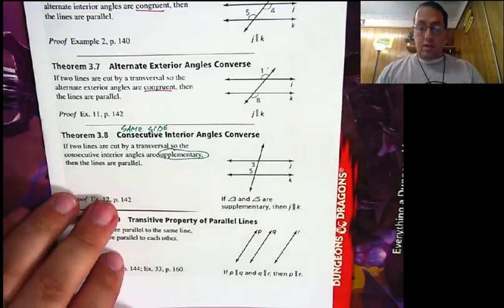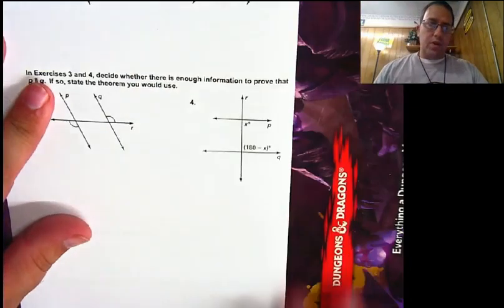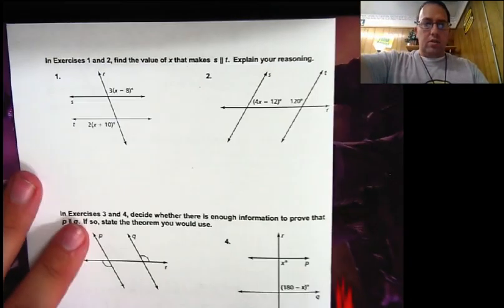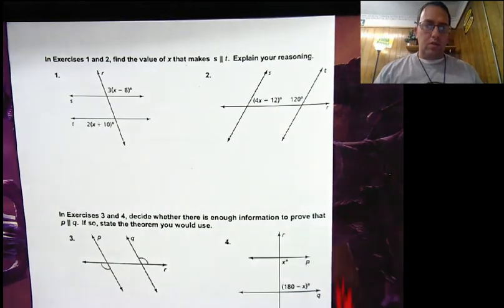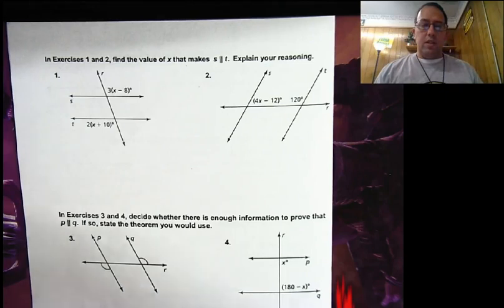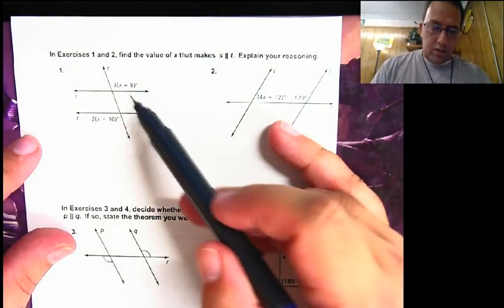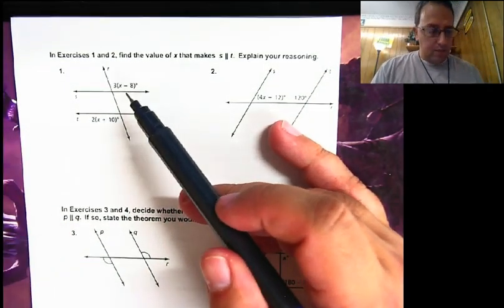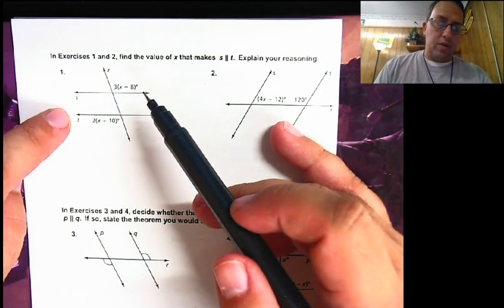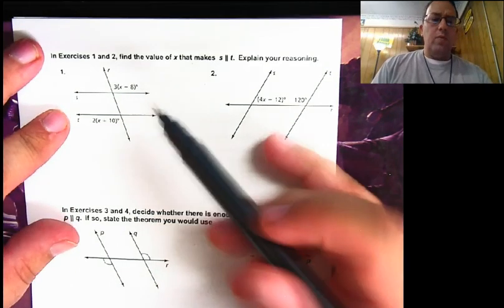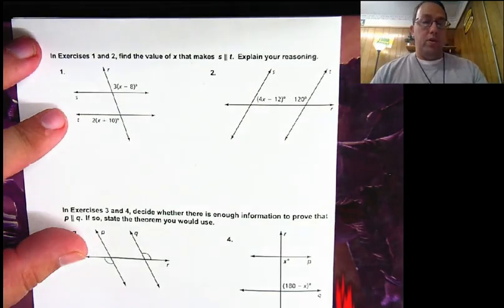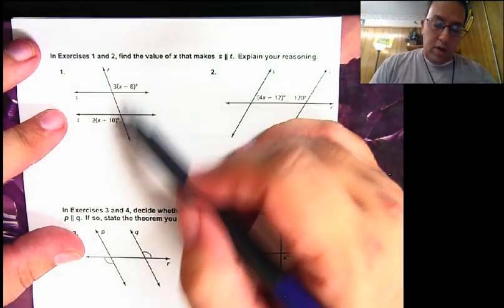So let's take a look at what we can do with these converses. Let's start with problems 1 and 2: find the value of x that will make line s parallel to line t, and explain your reasoning. On number one, we have these two angles that have x in them. We don't know that line s is parallel to line t, but we want to know what would make them parallel.